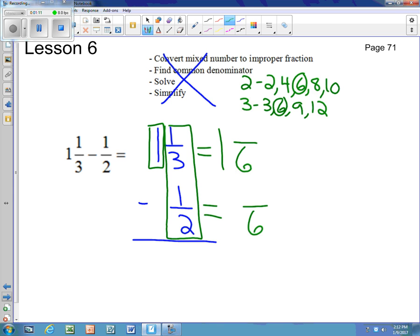So I use 6 here and I use 6 here. There's no whole number. So now I'm going to ask myself, what did I do to this 3 to get to 6? And I multiplied by 2, so I have to multiply by 2. And then what did I do to my 2 to get to 6? I multiplied by 3, so I have to multiply by 3, and I get 3.